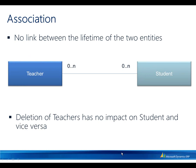When there is no link between the lifetime of two entities that are participating in the relation, the relationship type can be set as association. This is the most common type of relation. In this example, a teacher is associated with a student with a many-to-many relation. A teacher can have many students, a student can have many teachers. Deleting of one entity has no impact on the lifetime of the other entity. This type of relation is specified by choosing association.